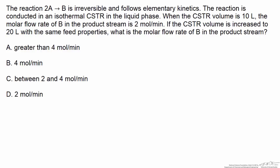In this problem statement we're dealing with a second order reaction in a CSTR. We know that it's second order because we're given that this reaction is irreversible and that it follows elementary kinetics, which means that the rate is determined by the collision of two A molecules. So we can write the rate of formation of B as being equal to a rate constant for that formation times the concentration of the reactant squared.